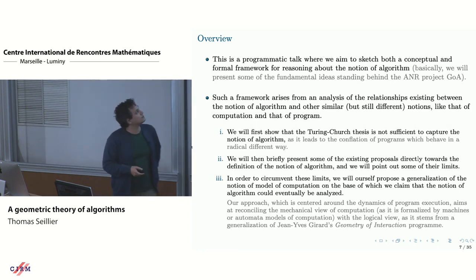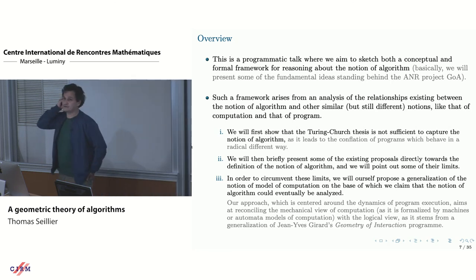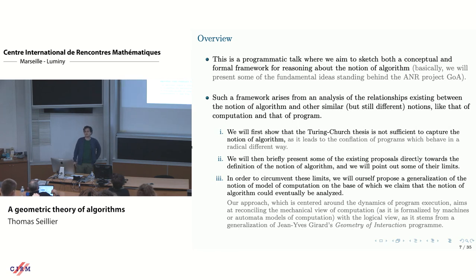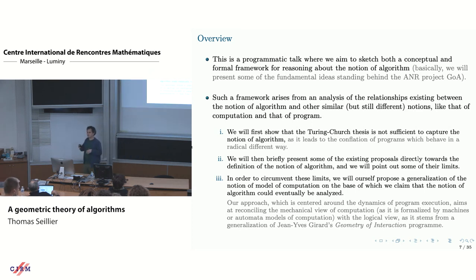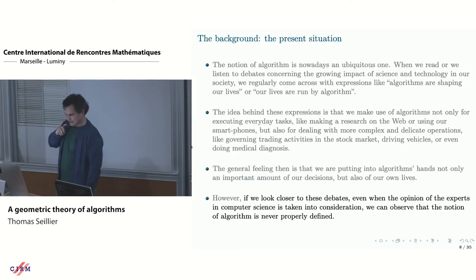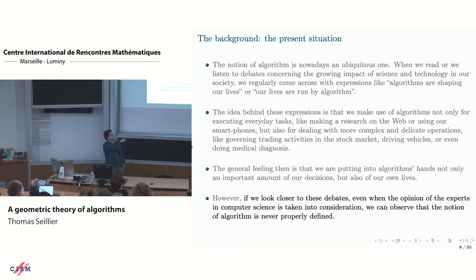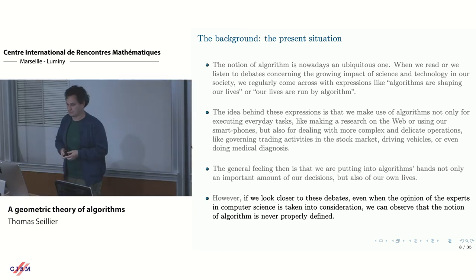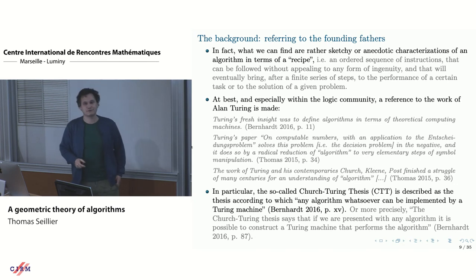The idea is to understand what an algorithm should be. The first thing is to realize that the Church-Turing thesis is actually not about algorithms. I'll explain a few proposals — we're not the first ones to say this. There are a few proposals for definitions of what an algorithm should be. Today we don't have a reasonable definition or consensus of how the notion of algorithm should be defined.